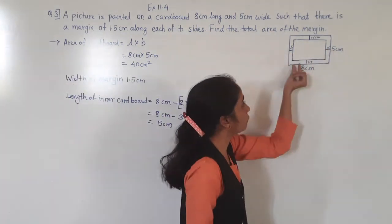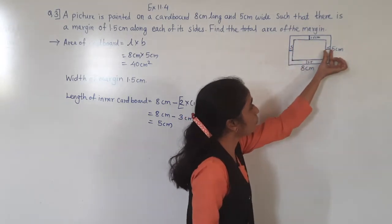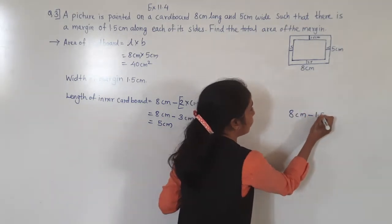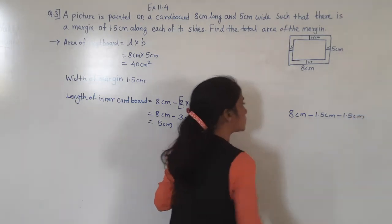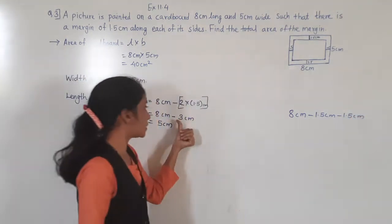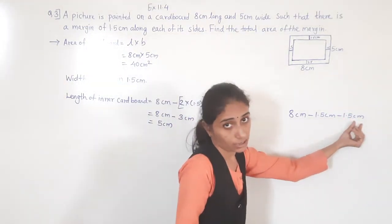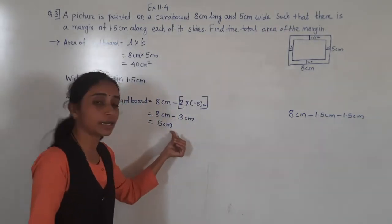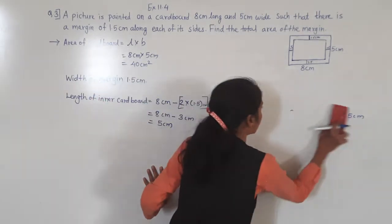From both sides we subtract 1.5. So 8 cm minus 1.5 cm minus 1.5 cm — this is also correct. 1.5 plus 1.5 equals 3 cm, so if you subtract 3 cm you get 5 cm. Both methods give the same answer.